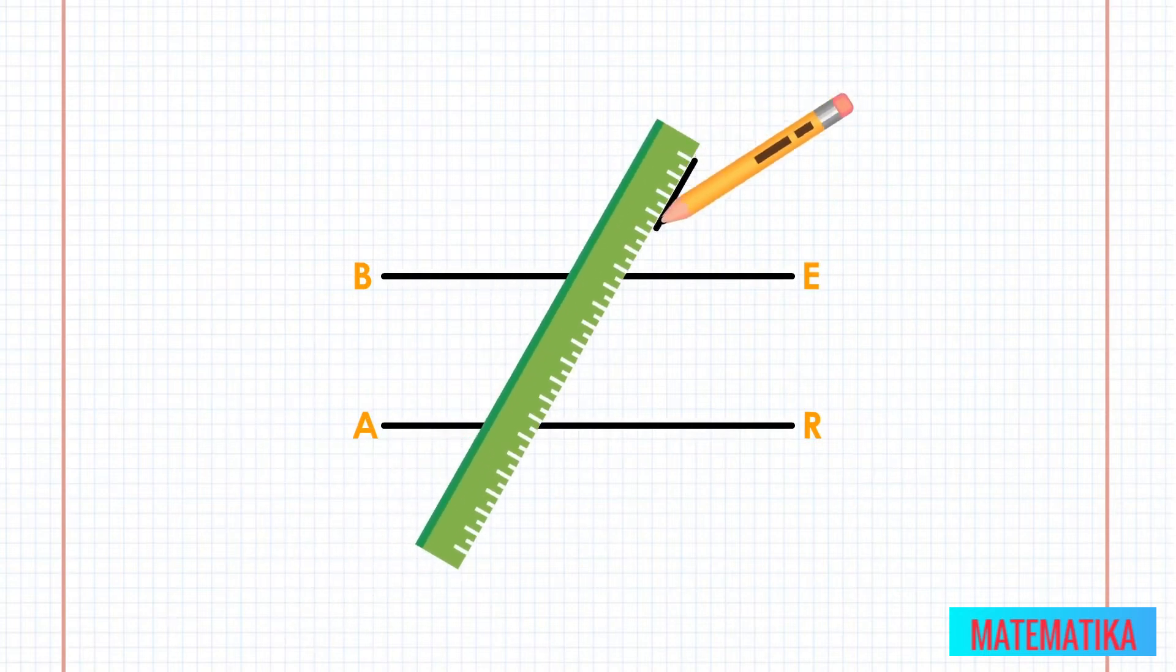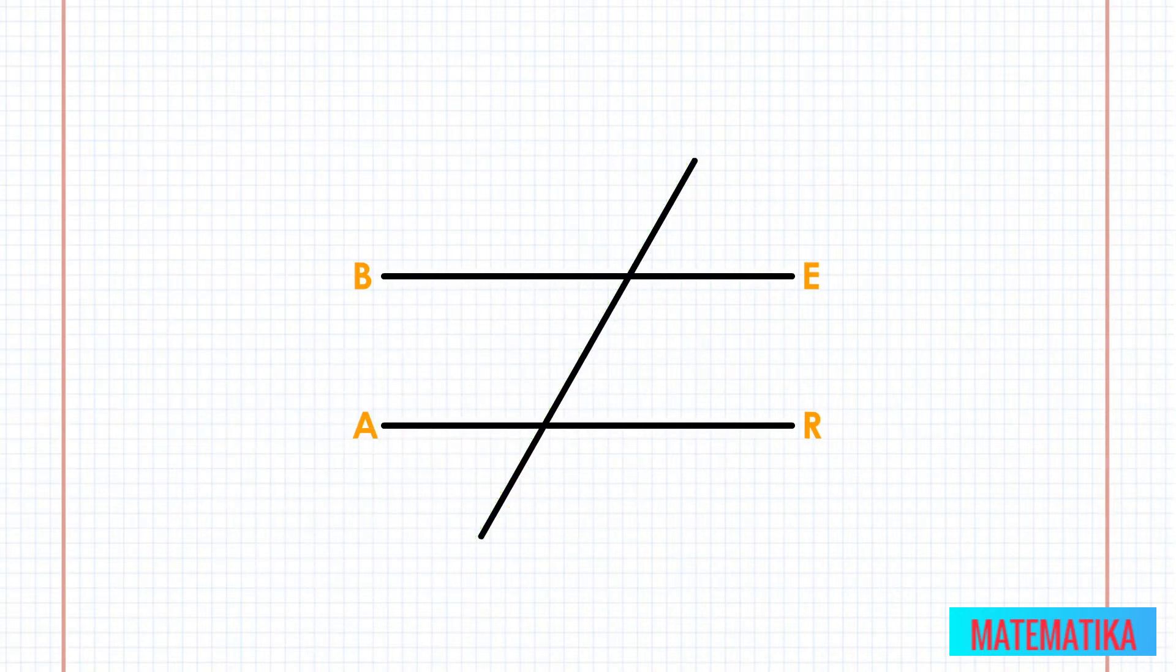Use a straight edge and pencil to draw a line cutting from above BE to below AR. Label it OW.